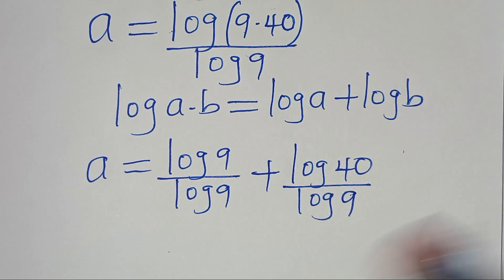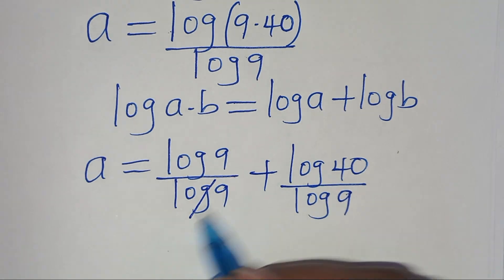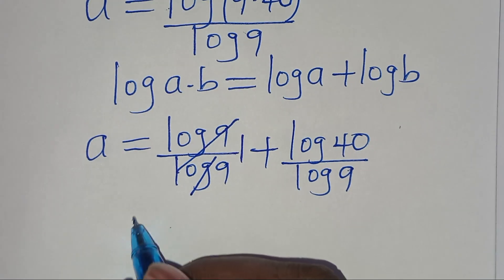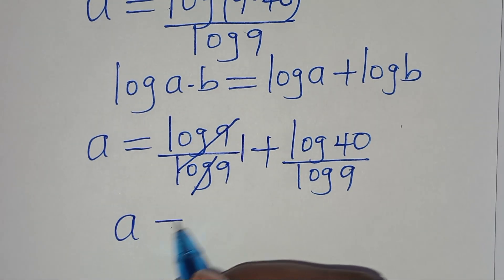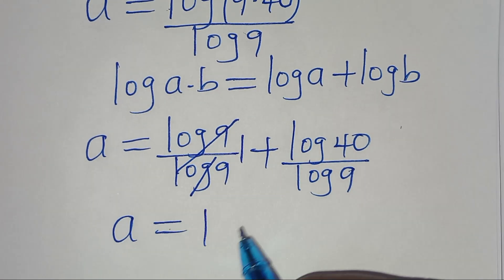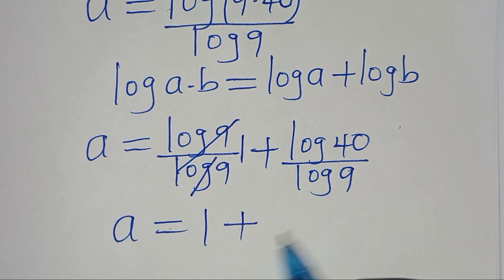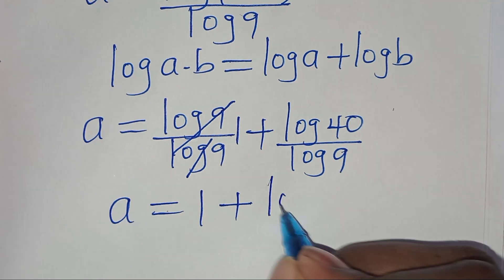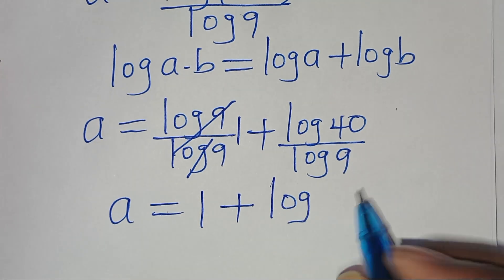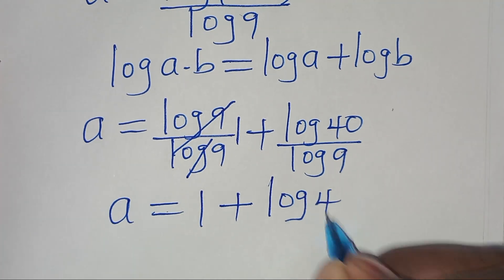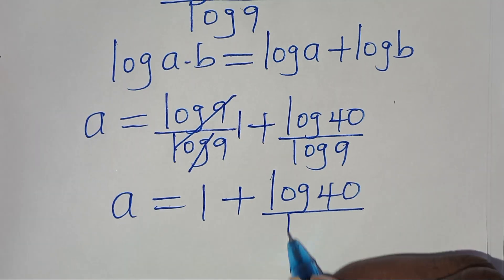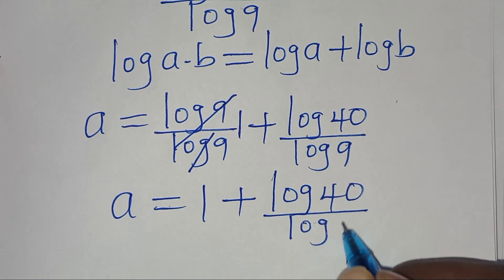So log 9 here simplifies, so that now we have a is equal to 1, plus log 40 divided by log 9.